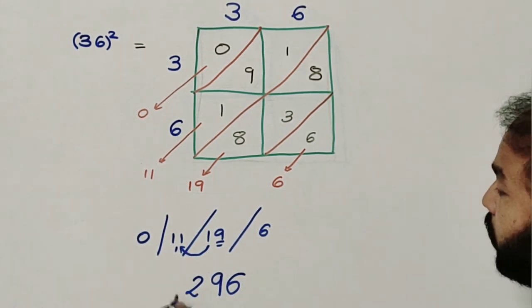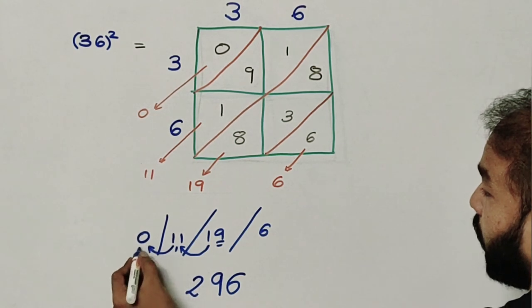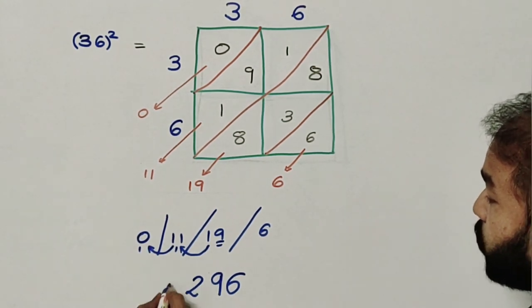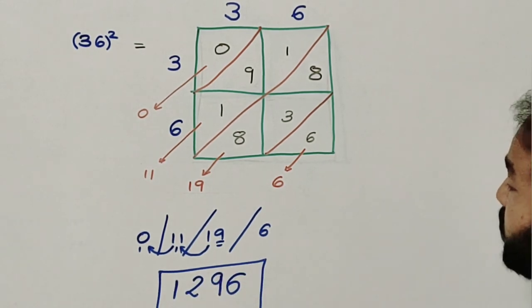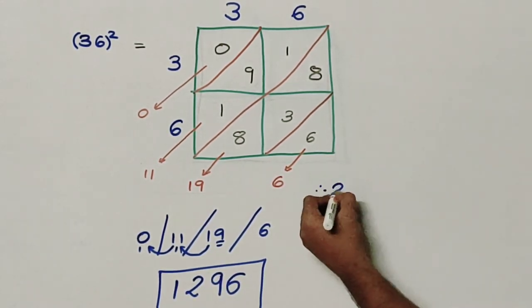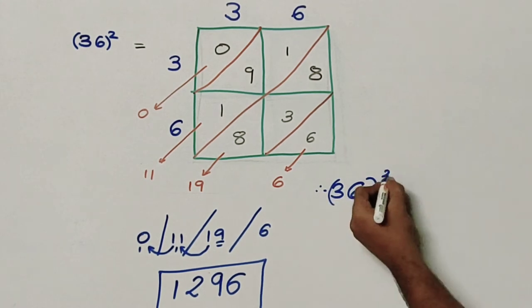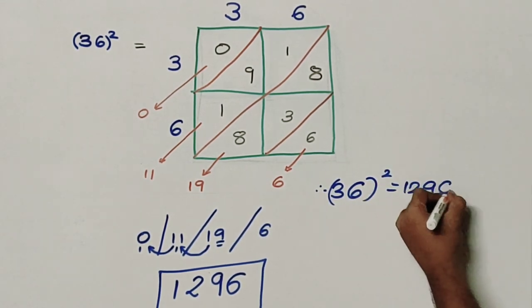So I will write 2 here. I will forward 1 again. So 0 plus 1 becomes 1 which makes it 1296. So therefore 36 square is 1296.